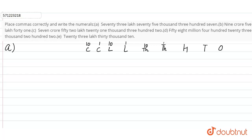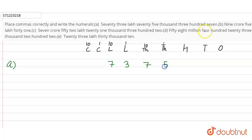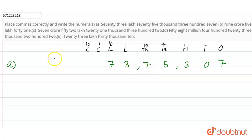Now Part A: 73 lakhs 75,307. So 307 can be written like this. Now we have to insert commas according to the Indian system — insert a comma after three places from right to left, then after every two places.